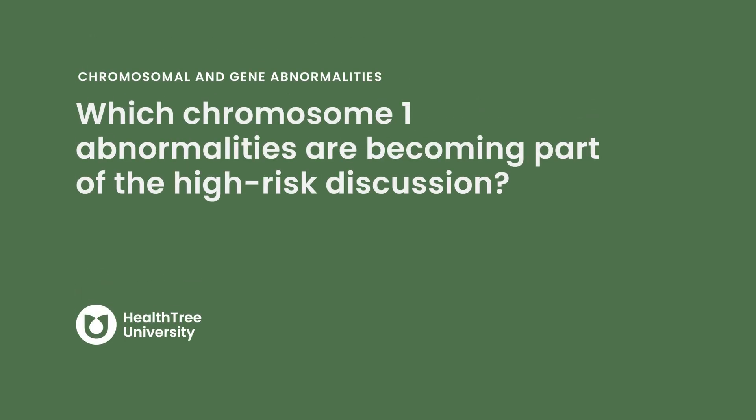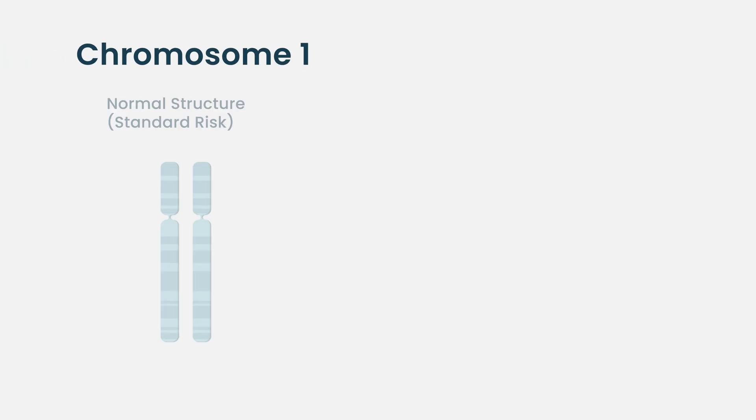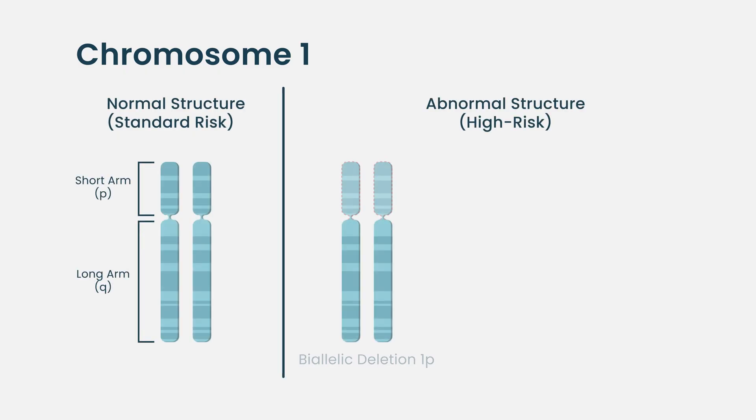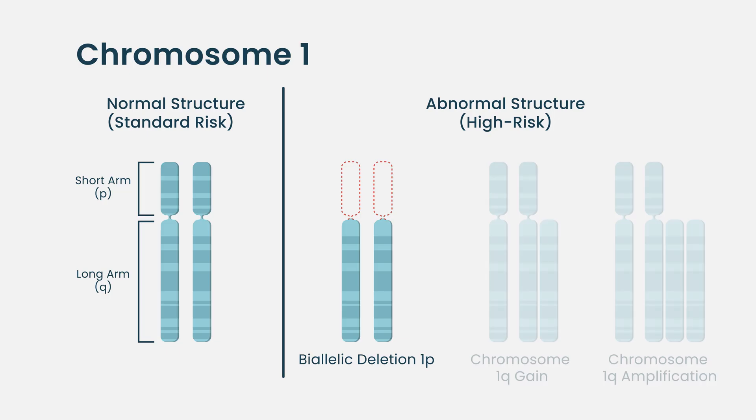Which chromosome 1 abnormalities are becoming part of the high-risk discussion? When you drill down into chromosome 1, the new high-risk definition allows for these chromosome 1 abnormalities to be considered part of the discussion. Chromosome 1, as with all chromosomes, has a short arm and a long arm — P and Q.